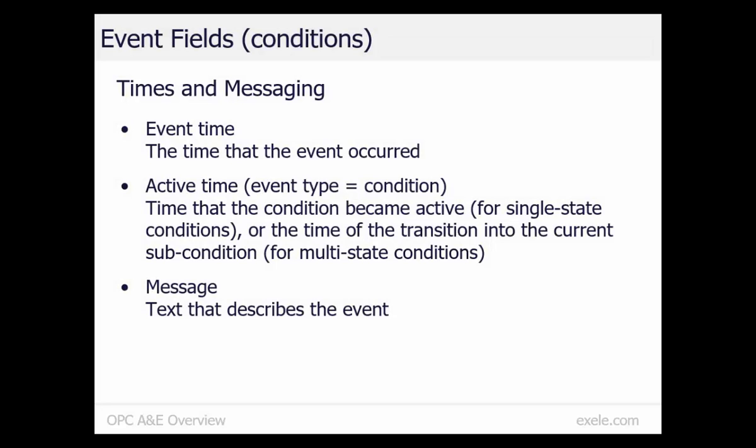There are two time event fields. The event time applies to all event types and is the time that the event occurred. For condition events, the active time is the time that the condition became active, or the subcondition changed. Because condition events may occur for reasons other than an active condition or change in subcondition, the event time and active time may contain different values.